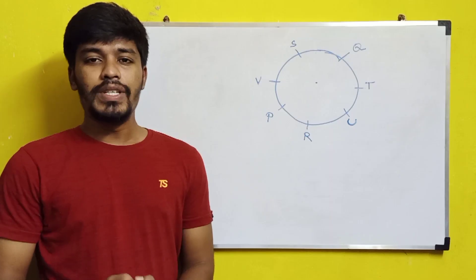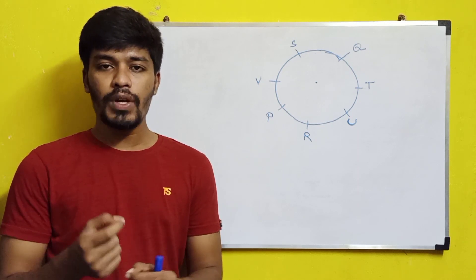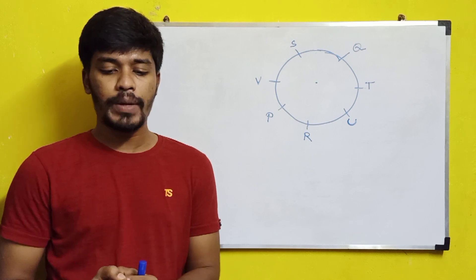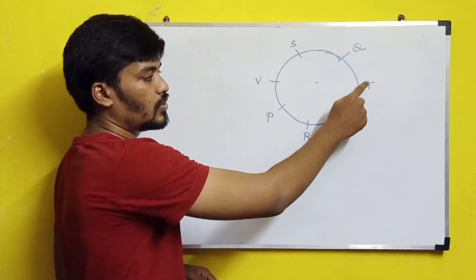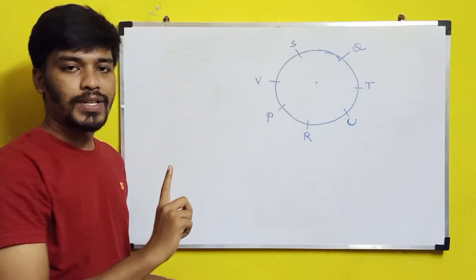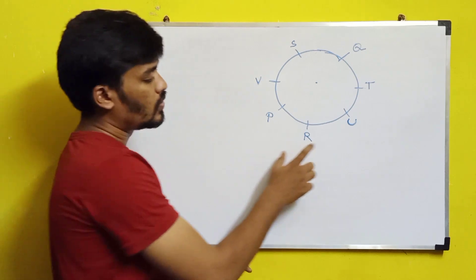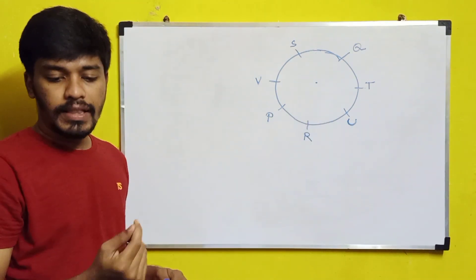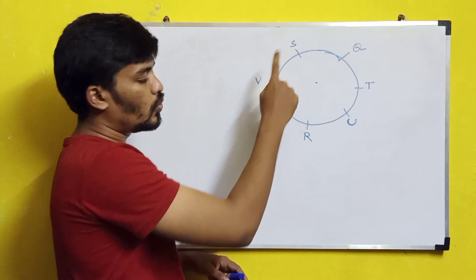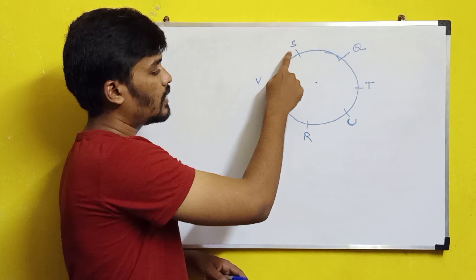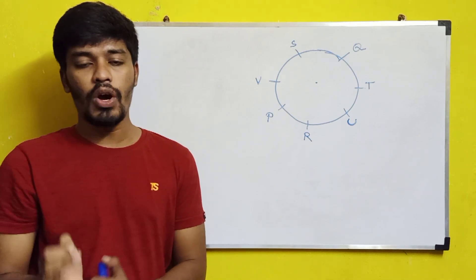Now for the second question: which of the following is false? Option A — P is fourth to the right of T — counting four positions to the right of T lands on P, so this is correct. Option B — U is to the immediate right of R — yes, this is also correct. Option C — U is third to the right of S — counting three positions to the right of S does not land on U, so this is the false statement. The third option is the correct answer.